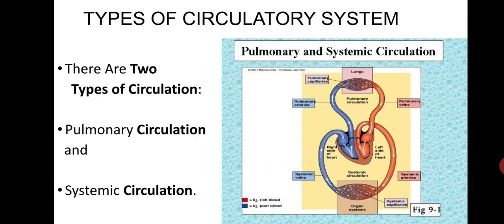Now we will talk about systemic circulation. The systemic circulation provides the functional blood supply to all the body tissues. It carries oxygen and nutrients to the cells and picks up carbon dioxide and waste products. Systemic circulation carries oxygenated blood from the left ventricle through the arteries to the capillaries in the tissues of the body.